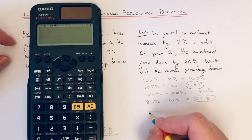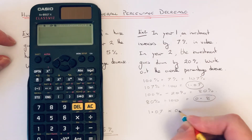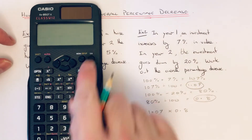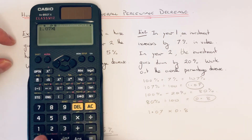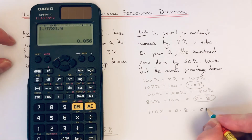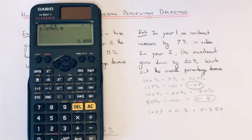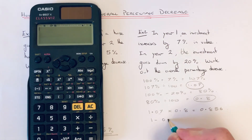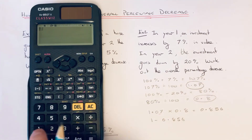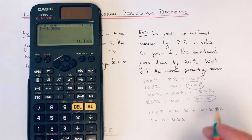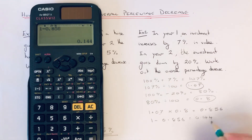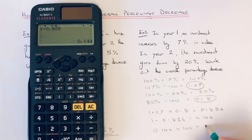We multiply these two decimals together: 1.07 times 0.8. On the calculator that gives us 0.856. We convert this back into a percentage by taking that decimal away from one, which gives us 0.144, then multiply by 100 to get 14.4 percent.